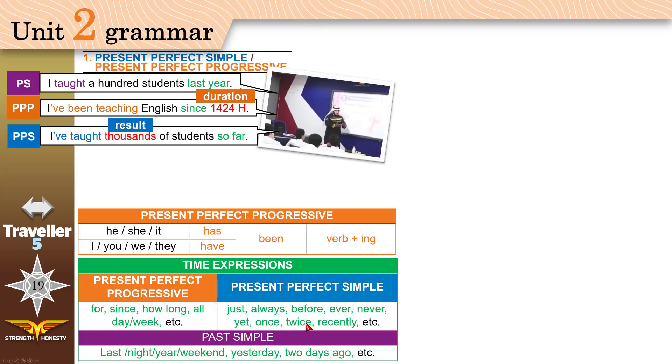Already with positive sentences, yet with negative or questions. You can also use 'once' (one time), 'twice,' 'many times,' 'three times,' 'recently' (meaning not long ago). With past simple you use: last night, last year, yesterday, two days ago.